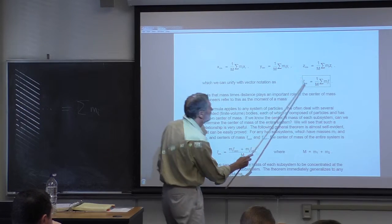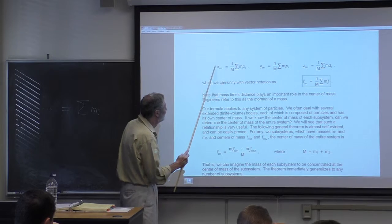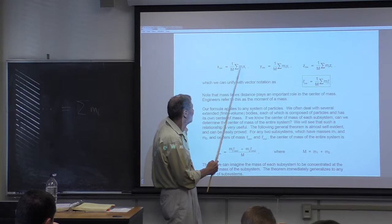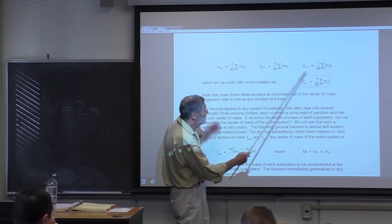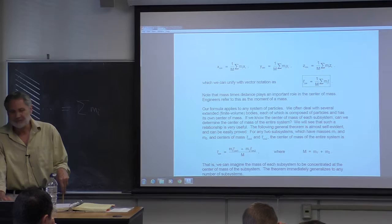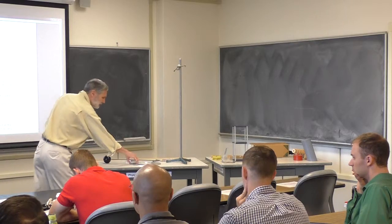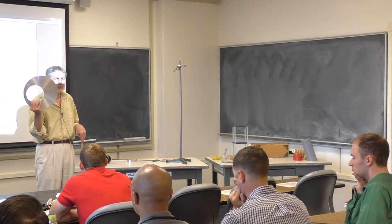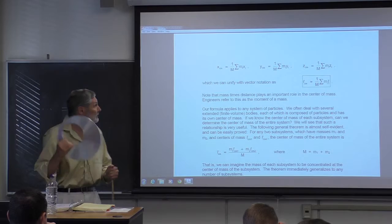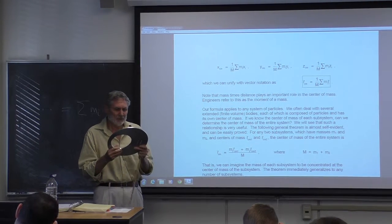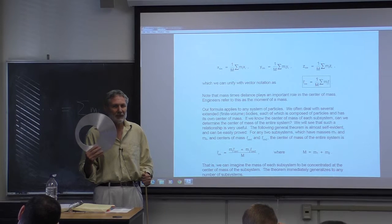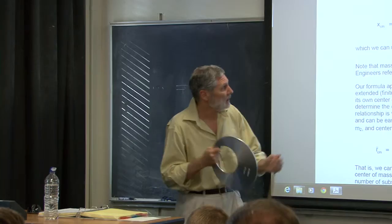We can unify this by multiplying by unit vectors i, j, and adding them together to get the vector form. Now, what if it's a continuous body? Our definition is for particles, but you know the answer — it's calculus. We imagine splitting it up into a bunch of little tiny masses, and the sum becomes an integral.